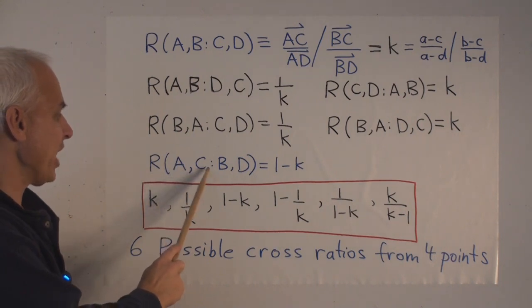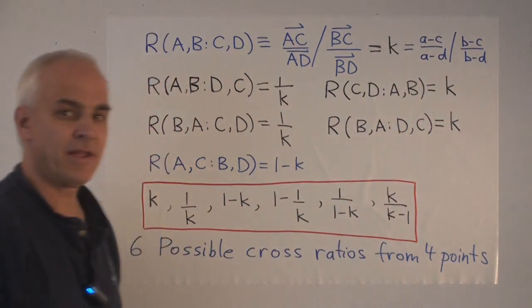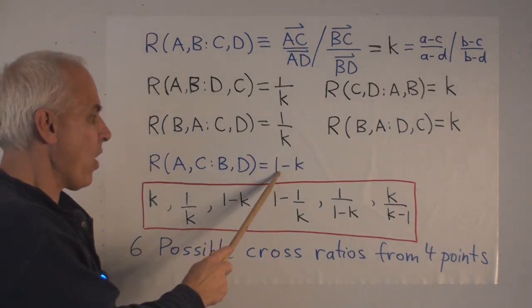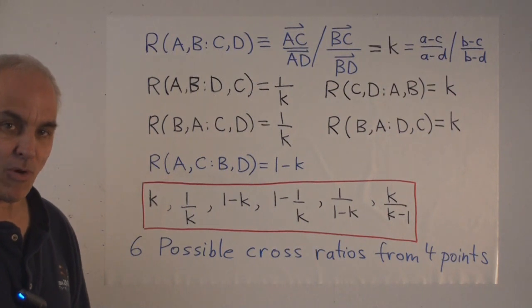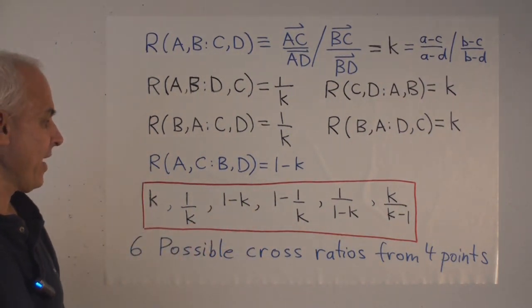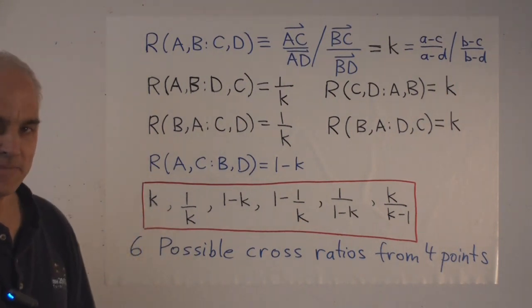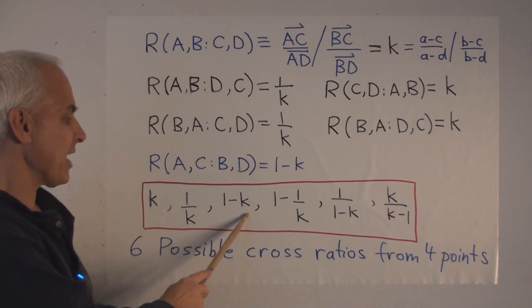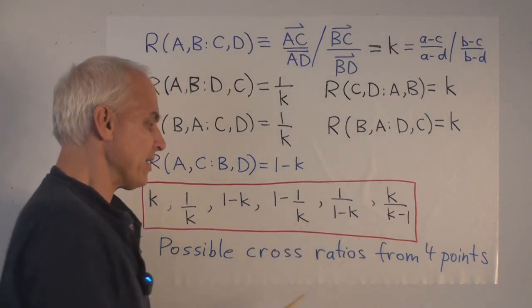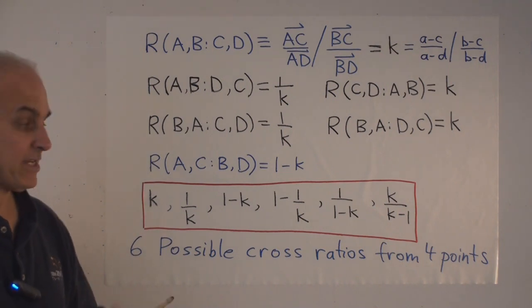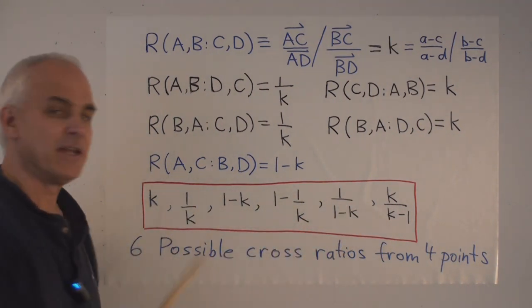Somewhat more interesting is what happens when you interchange B and C. So then it's a nice exercise to take this expression and interchange the B and the C, and show that what you get is 1 minus K. So then it turns out that these ways of interchanging our points generates all possible combinations. And we get all together six different possible cross ratios arising from the original one K. The original one K together with one over K, one minus K, one minus one over K, which is the same as K minus one over K, one over one minus K, and K over K minus one. So these are the six possible cross ratios you get by taking any four collinear points and considering cross ratios in all possible orders. It's a rather interesting set of transformations.